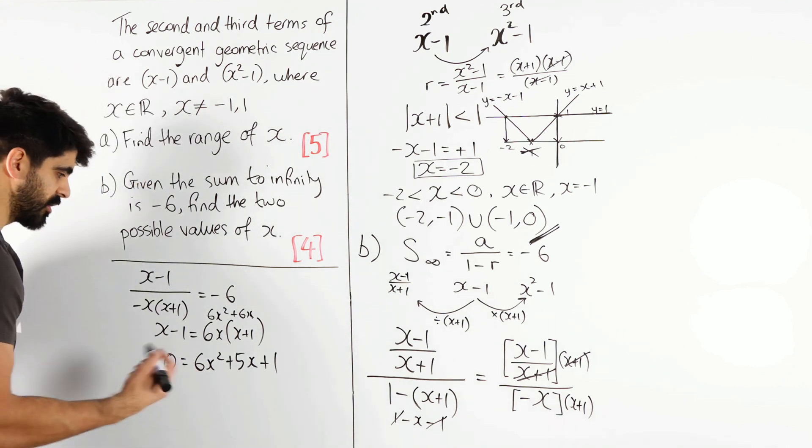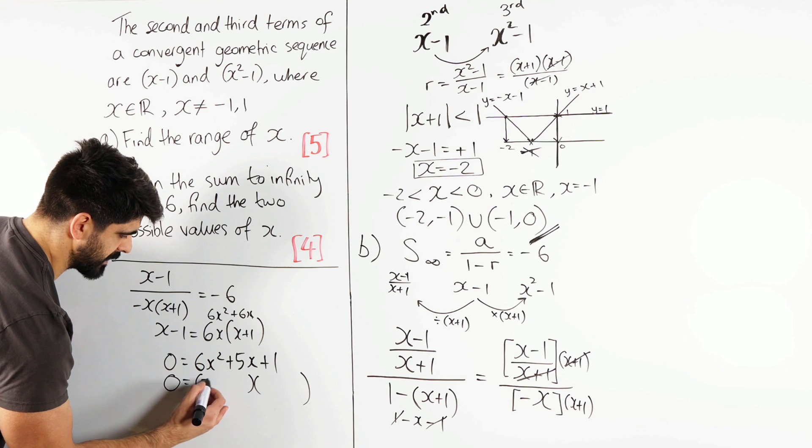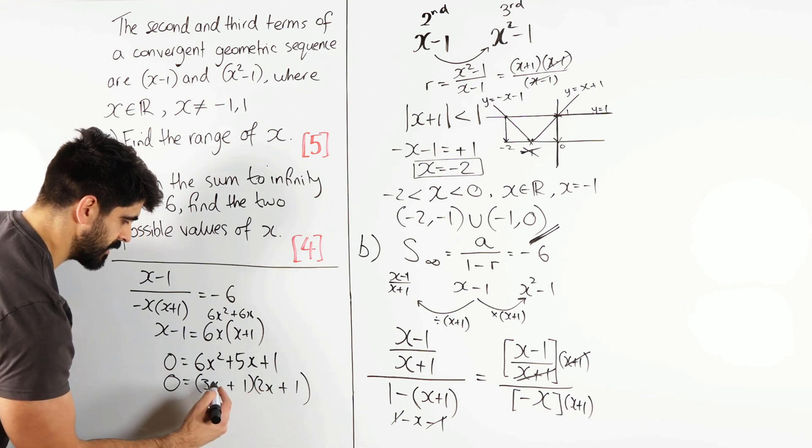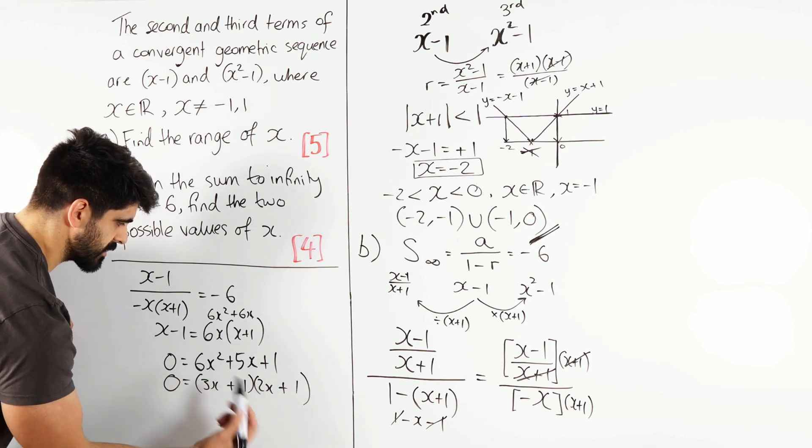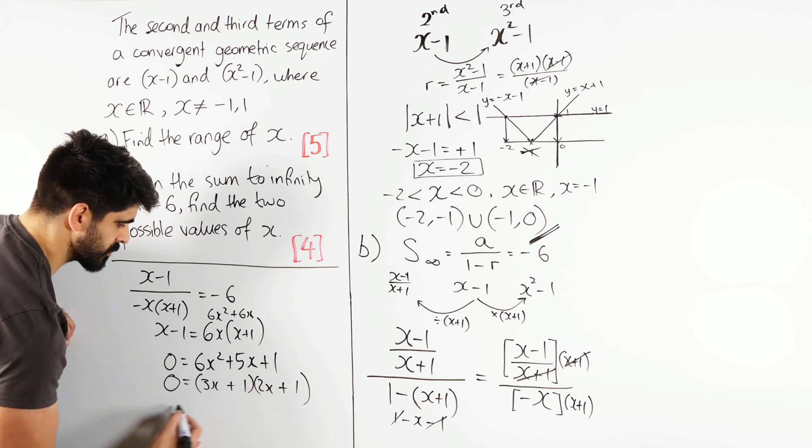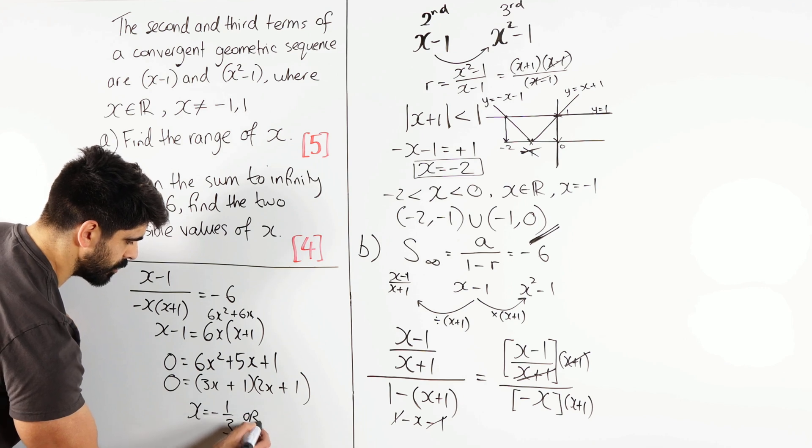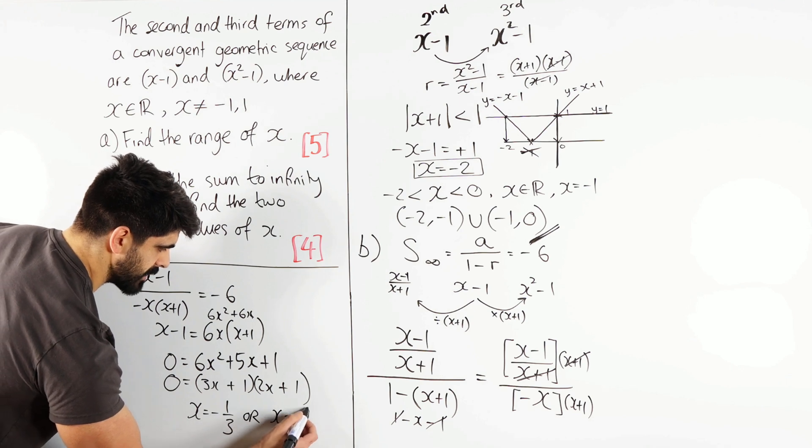And yes, I think this is going to be a 2x. Obviously you can use your calculator here, but I think this is a clean factorize: 3x and 2x, 1, 1, both plus. 6x squared, plus 3x, plus 2x, it works. So either 3x plus 1 is 0, so we get x is minus 1 third, or 2x plus 1 is 0, so x is minus 1 half.